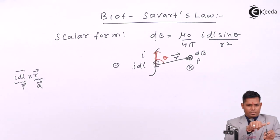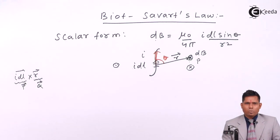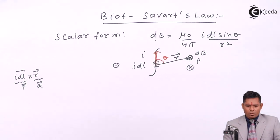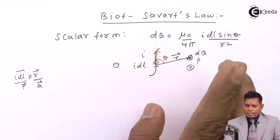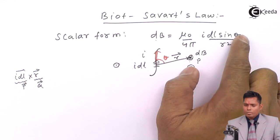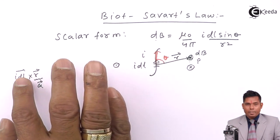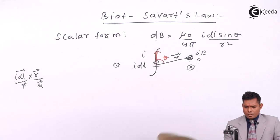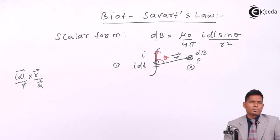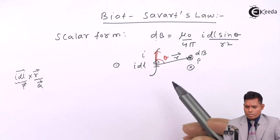p cross q will be like this, and q cross p will be in the opposite direction — they are not commutative; a cross b is not equal to b cross a. To write this in vector form, there is no r in the scalar expression, but if I write it this way: the result will be dl r sin theta, but we only have dl sin theta. So I multiply one r and divide one r — it's a simple method.